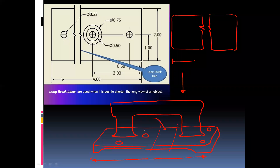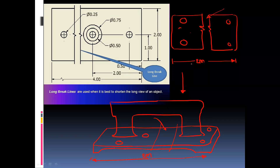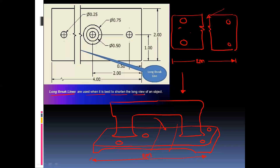We can then give the actual dimension — suppose this total dimension is 2 meters. The object has some features like holes, and in this portion there is no feature, so we have removed it to fit the view on the drawing sheet. This is the use — to break the continuous view into two parts and reduce the size of that complete view. Long break lines are used when it is best to shorten the long view of an object.